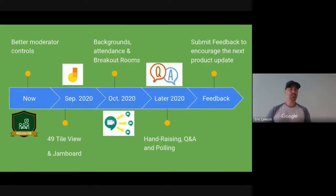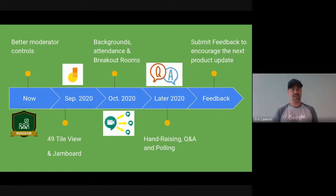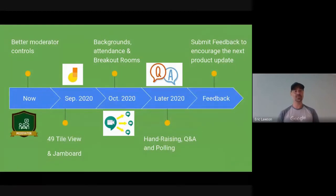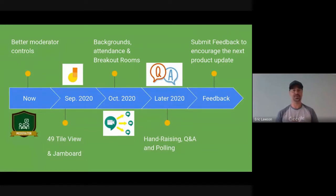Better moderator controls are available now. In September, you're going to get a larger grid view up to 49 — a seven by seven. And whiteboard integration with Google Jamboard will be built right into Google Meet. That's an exciting new feature that a lot of math teachers especially really want.